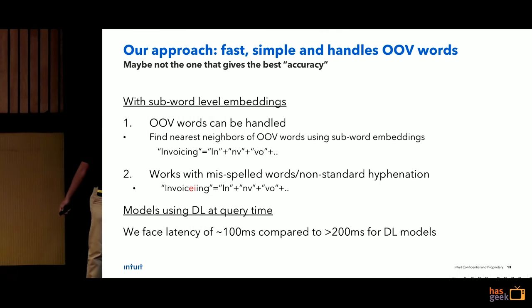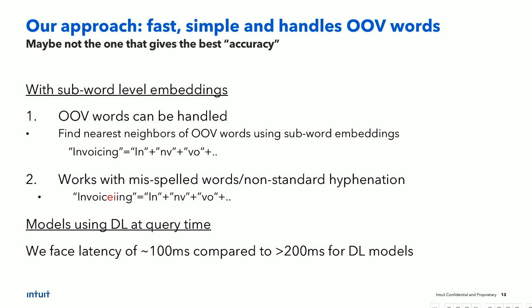If you look at a correct word and its misspelled version, most of the bigrams will be common except for two or three depending on where the misspelling is. The net result is that we achieved a latency of typically less than 100 milliseconds — 100ms was the P98, meaning only in 2% of cases we exceeded it. Compared to deep learning models which typically show at least 200 milliseconds latency, this is a clear win.